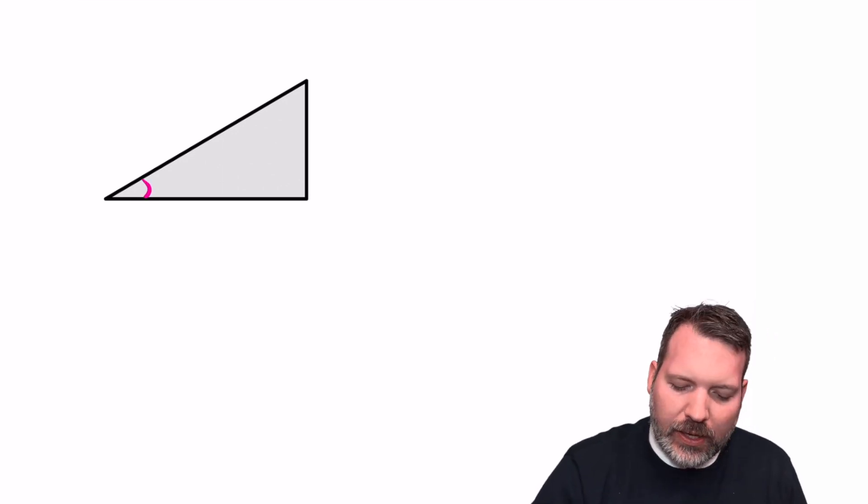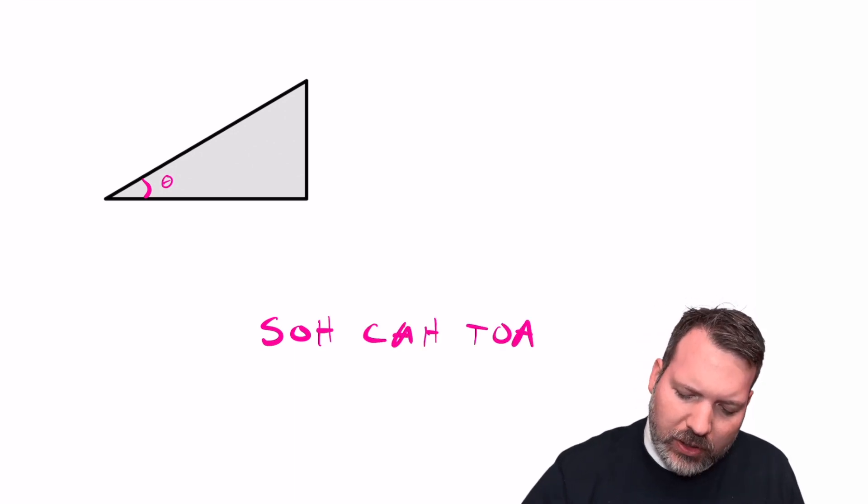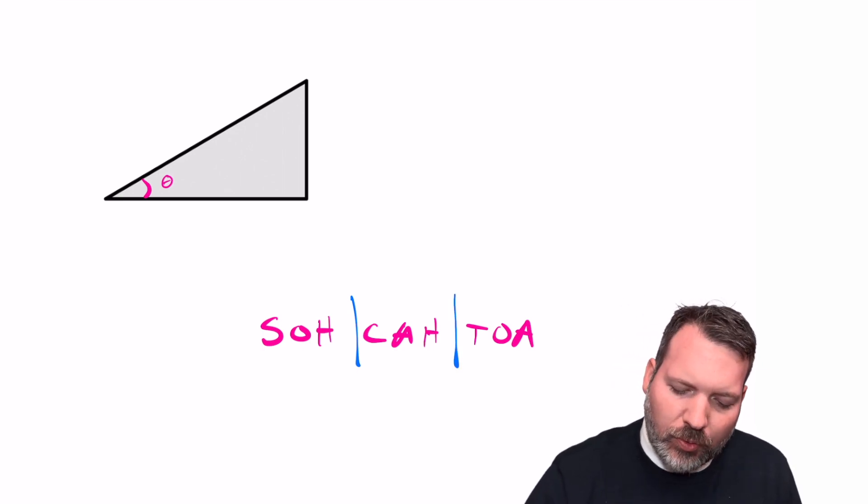So we'll say things like, if this angle down here is theta—why are we using Greek letters all of a sudden, who knows—but whatever. If this angle is theta, then we're supposed to use something called SOHCAHTOA. And SOHCAHTOA is a way to remember these special ratios within the right triangle.